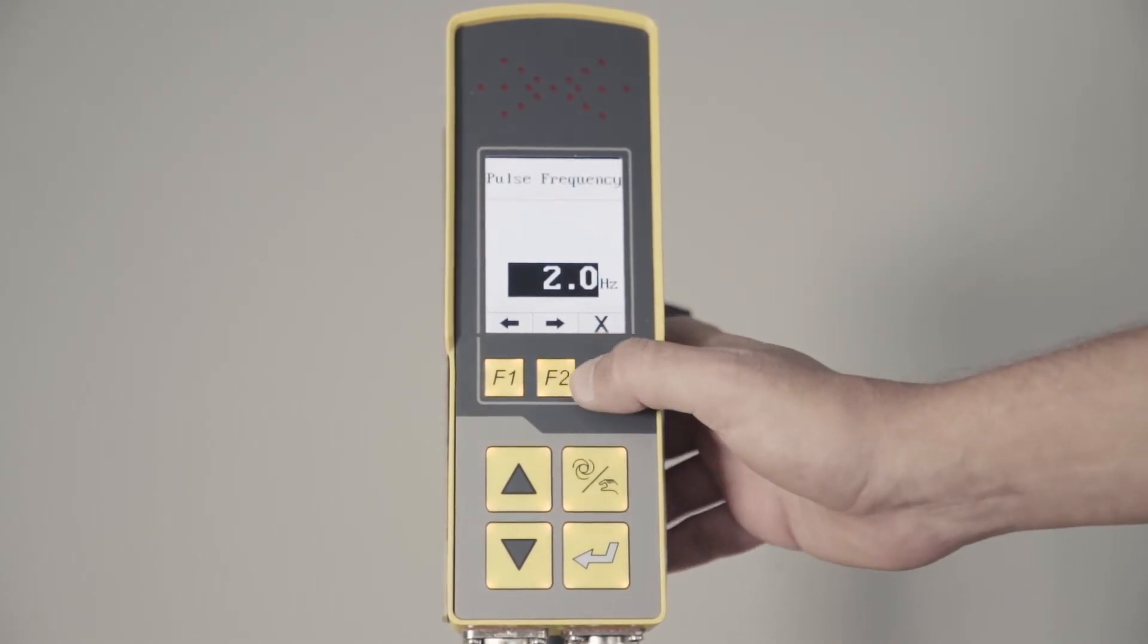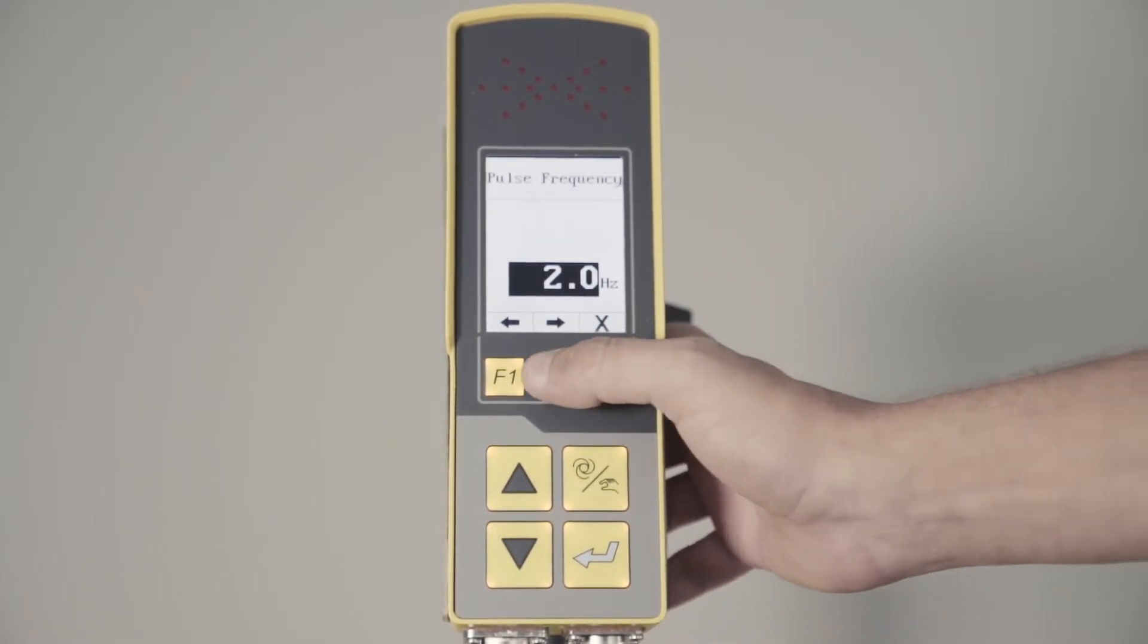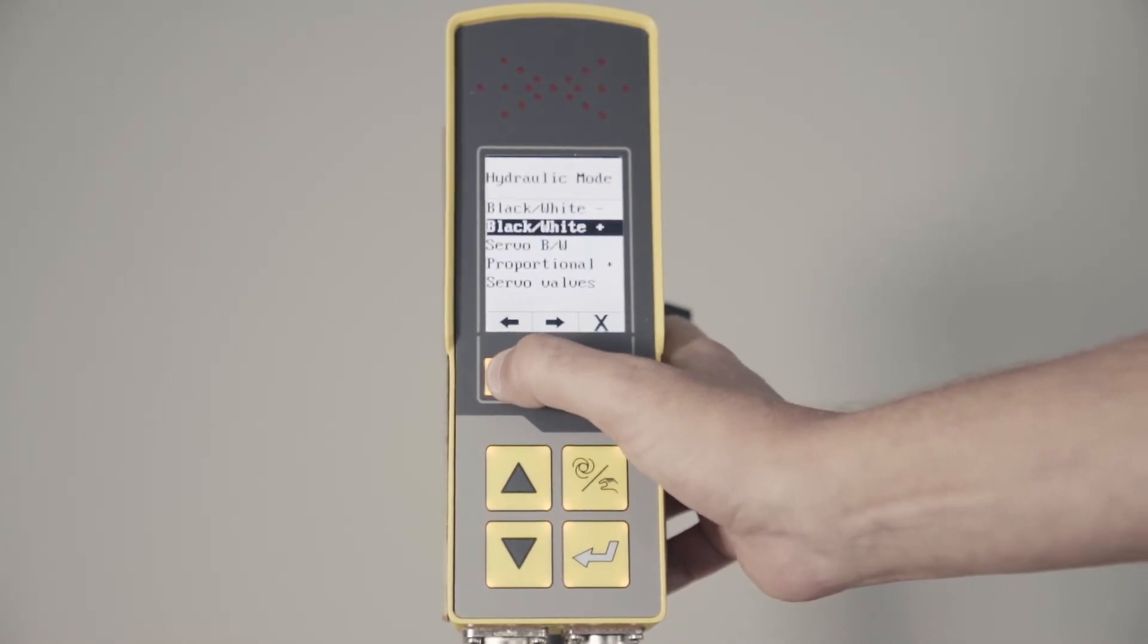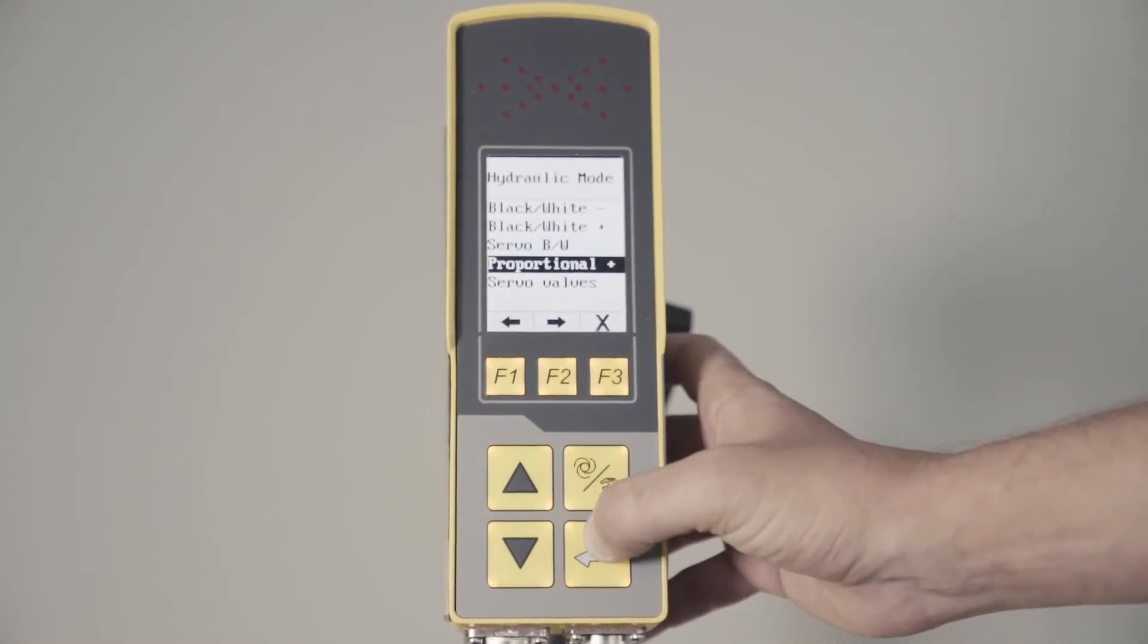Pulse frequency will change on on-off valve. If you have a proportional valve, the proportional frequency stays exactly the same at 120.